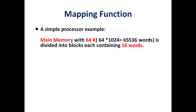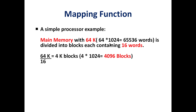Main memory is 64K words. 64K is 64 into 1024, which equals 65,536 words in the main memory. We divide the main memory into blocks of 16 words each. In 64K words, 64K divided by 16 gives us 4K blocks.